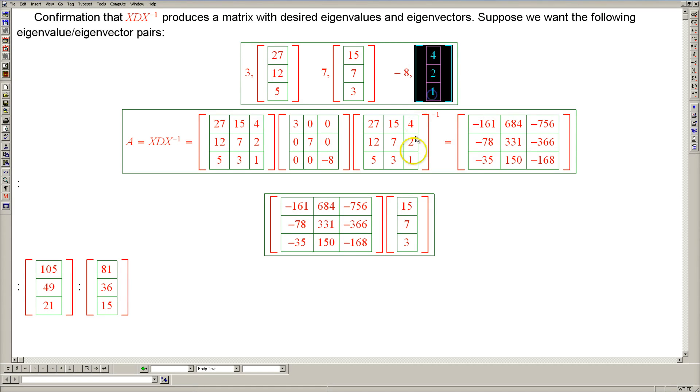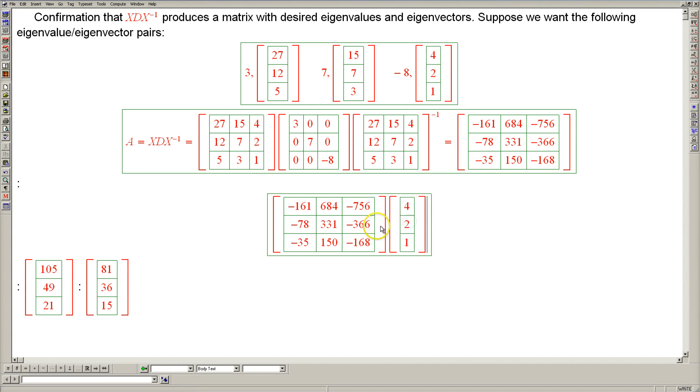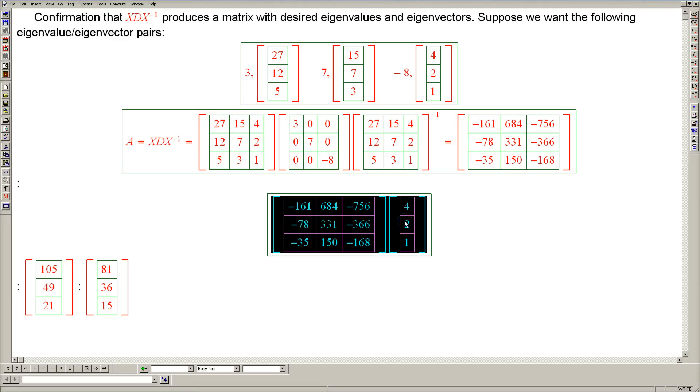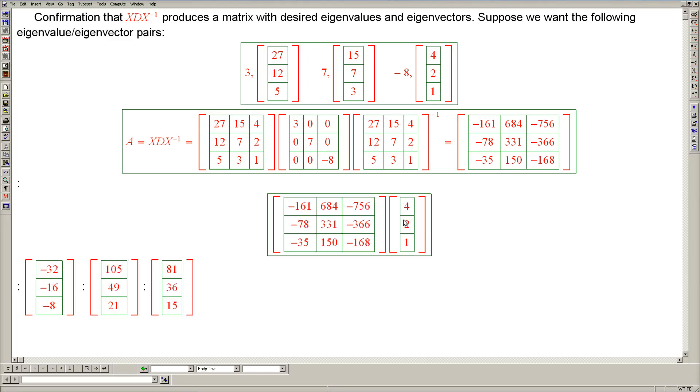And finally, the multiple here should be -8, so we're expecting to see -32, -16, -8. And we do.